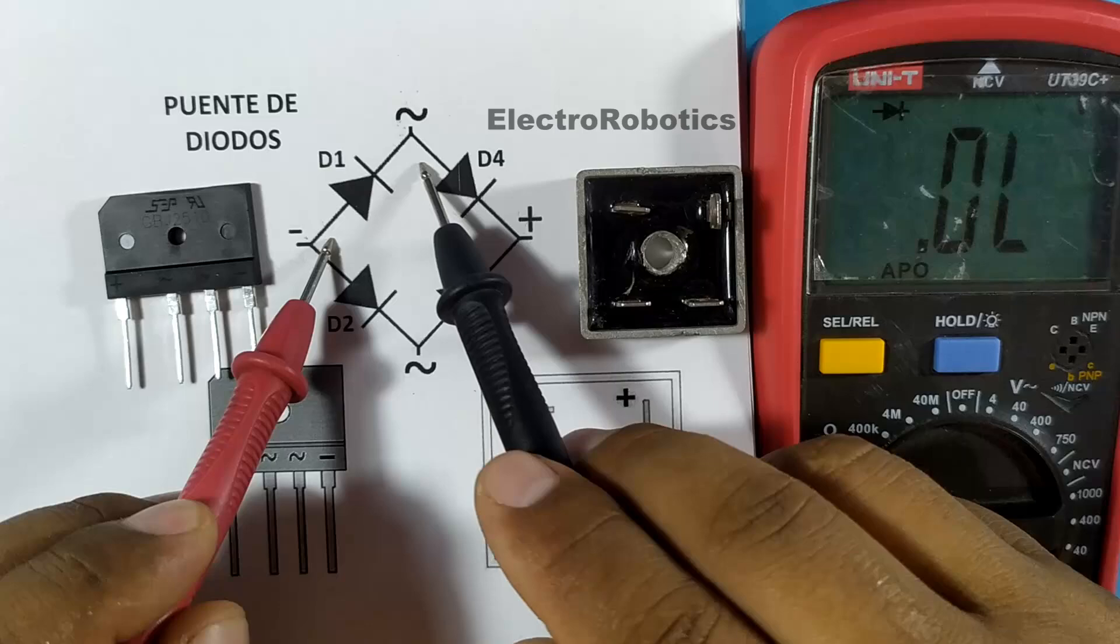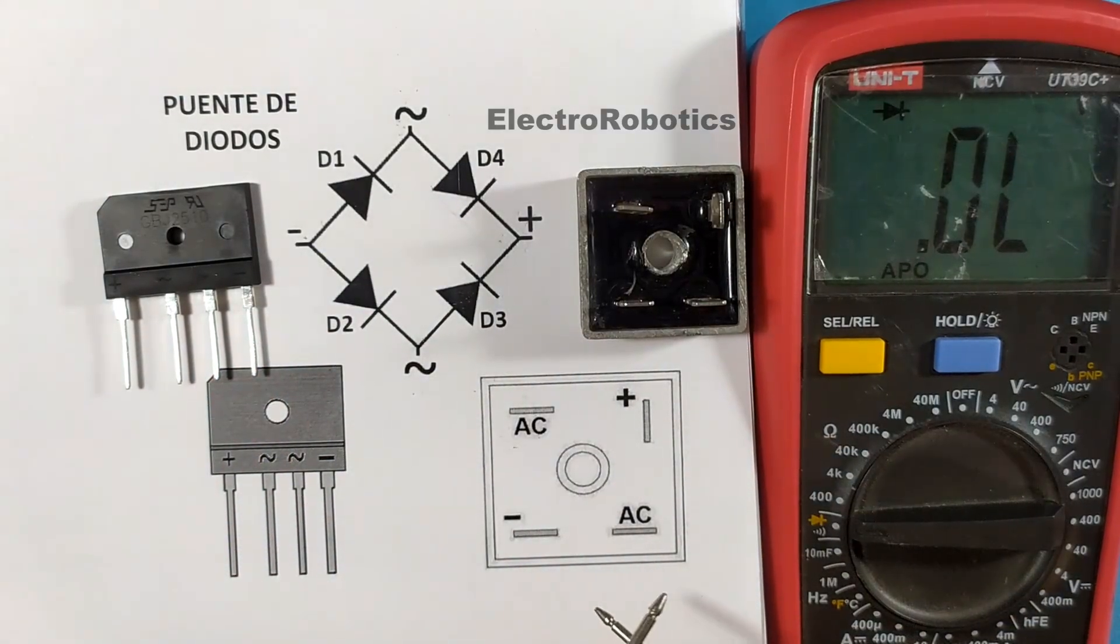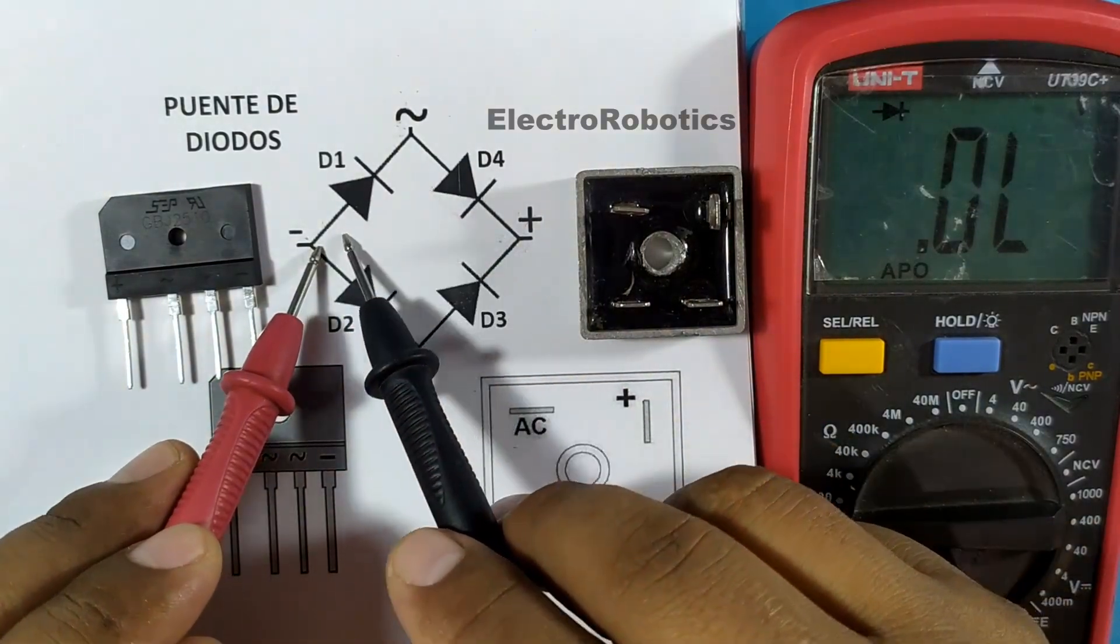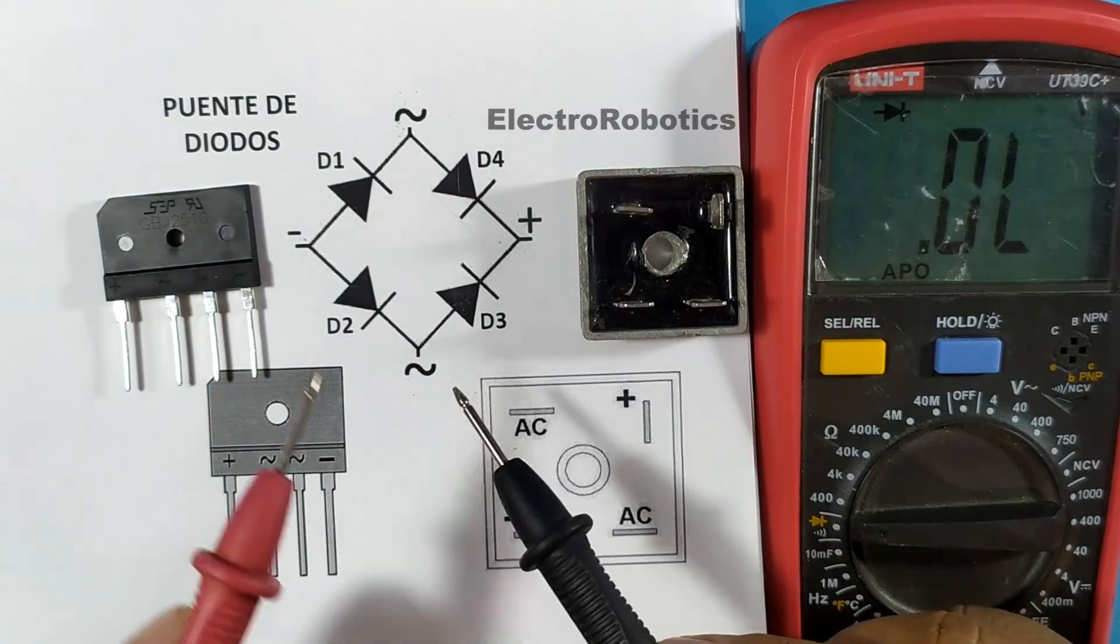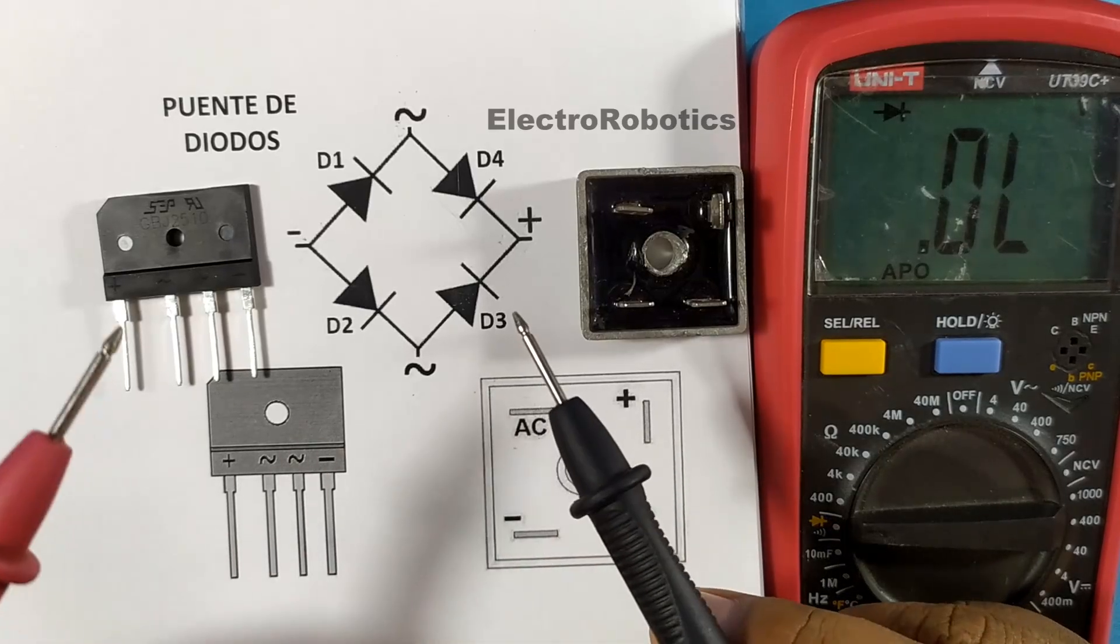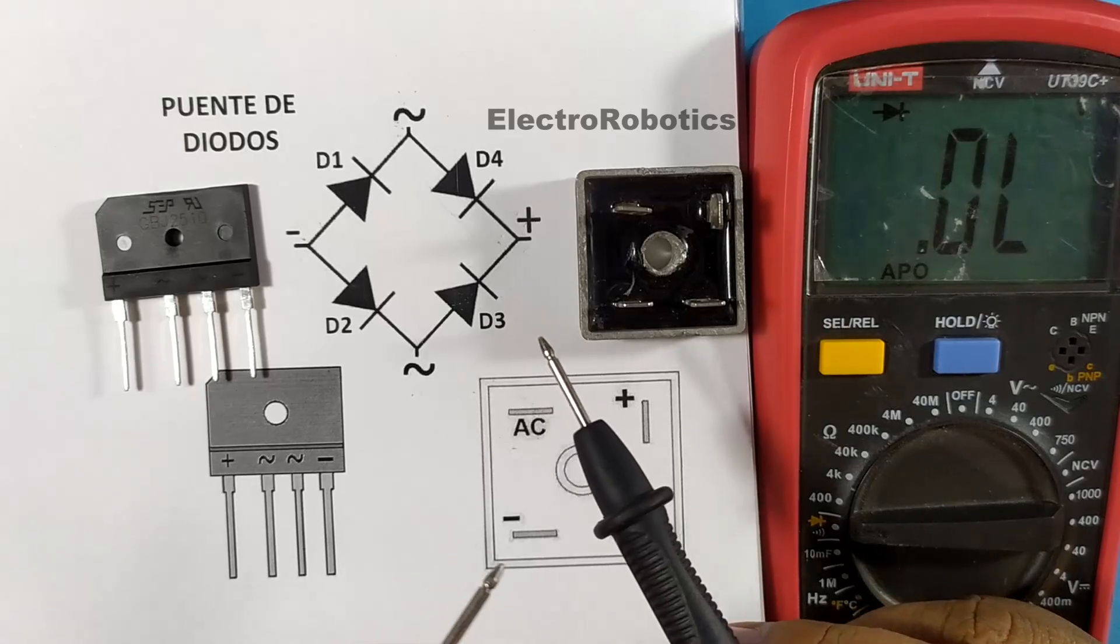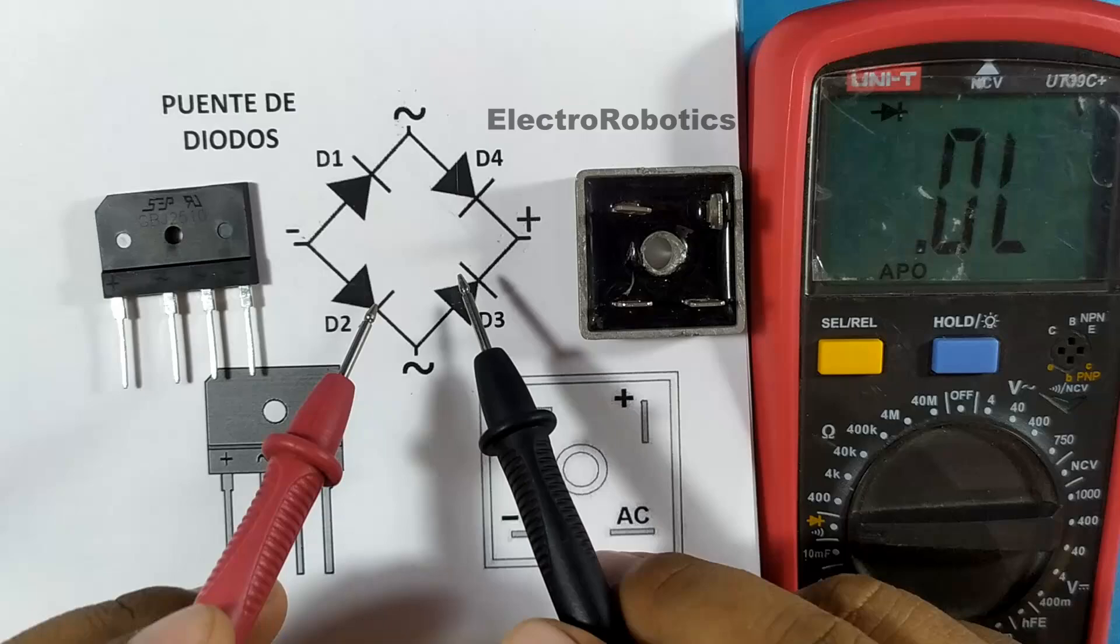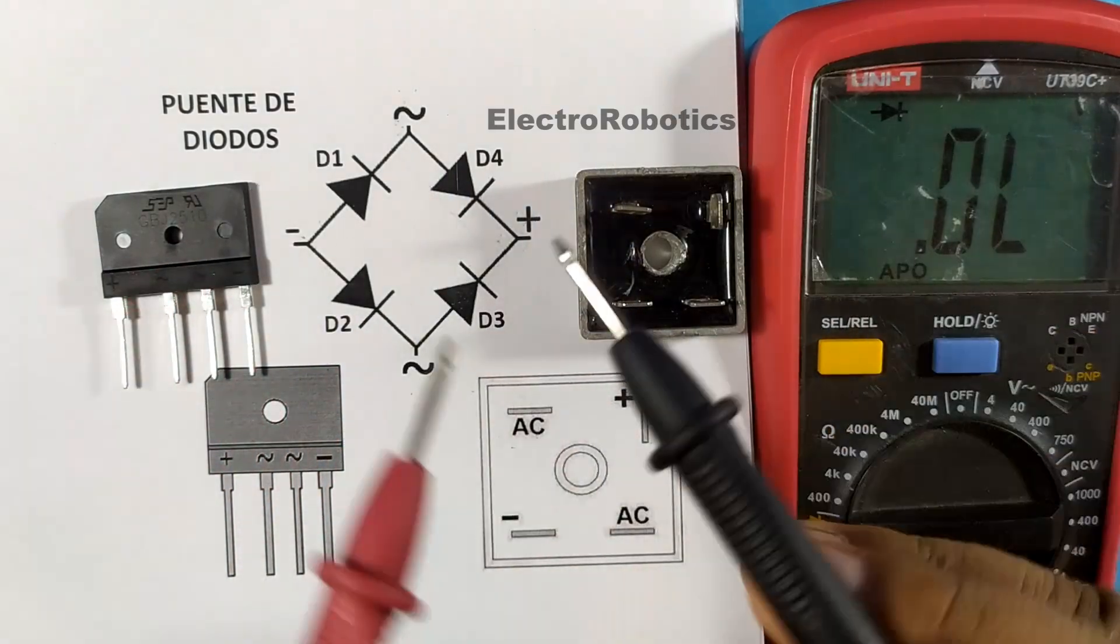Therefore, both currents will meet. So the multimeter must mark a value. What value? Well, the value that corresponds to passing through two diodes, in this case double. If a diode marks 600, then they will have an approximate value of 1200. If a diode marks 500, they will have an approximate value of 1000. And since they are in parallel, then the value will be slightly reduced. Slightly. Not much.